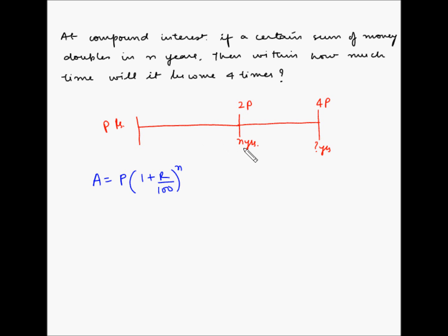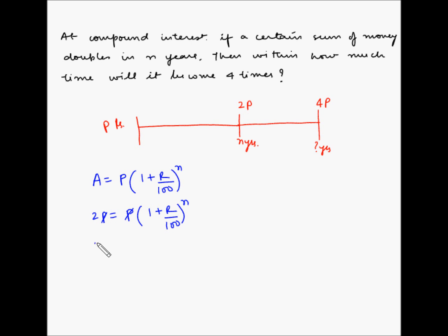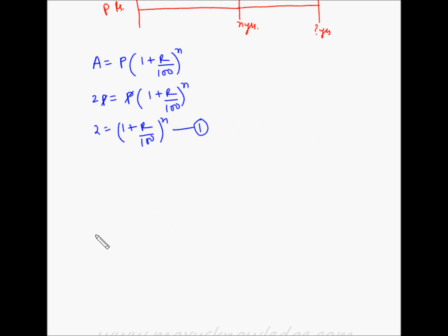Let's take the first case: at the end of n years the amount is two times the principal, so A = 2P. Therefore: 2P = P × (1 + r/100)^n. P cancels with P, giving us: 2 = (1 + r/100)^n. Let's call this our first equation.